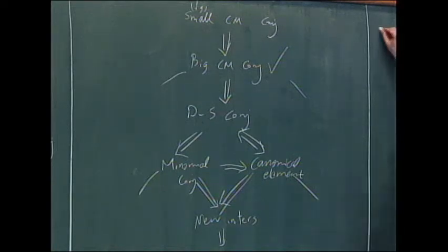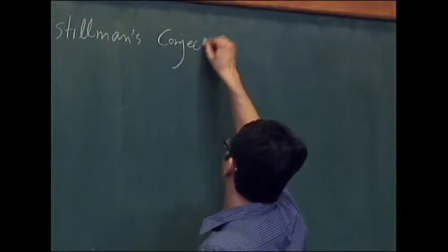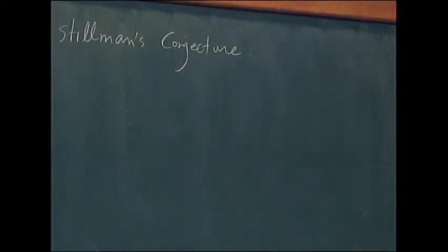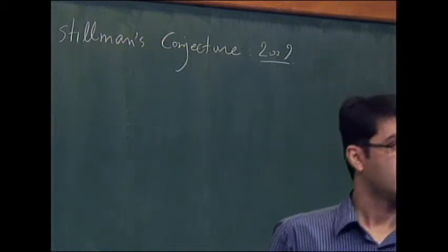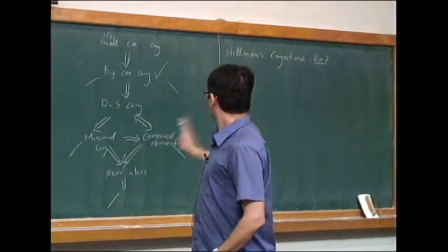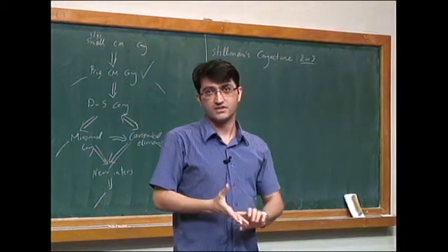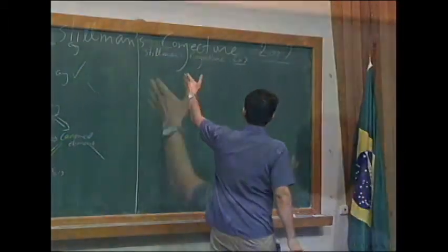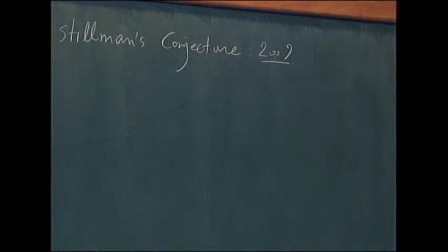The second conjecture is the Stillman conjecture. This is a rather new conjecture, open since 2009, but a very bold one. Stillman is one of the developers of Macaulay 2 software. He had lots of experimental computation looking at resolutions of ideals. To explain Stillman's conjecture, let me go back to the Hilbert syzygy theorem.